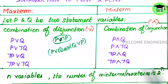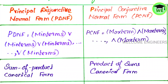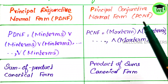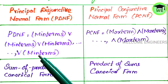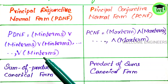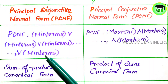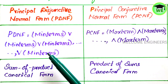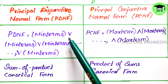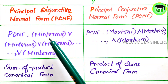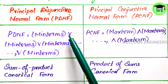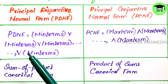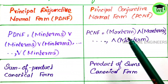Now we are going to understand what is meant by PDNF and PCNF. In PDNF, for a given statement formula, an equivalent formula consisting of the disjunction of min terms only is known as its Principal Disjunctive Normal Form, or in short form PDNF. Disjunction means the OR symbol; min terms use the AND symbol in between variables. So PDNF looks like: min term OR min term OR min term, and so on.